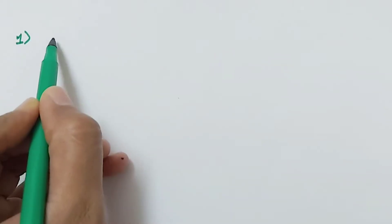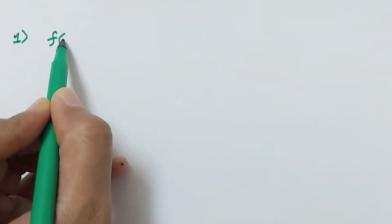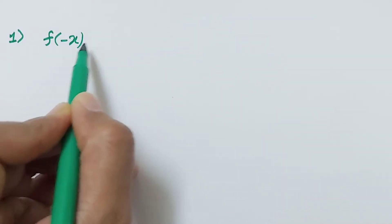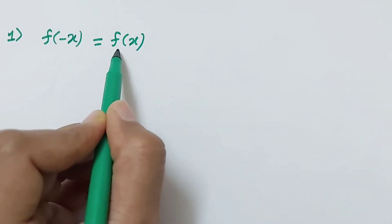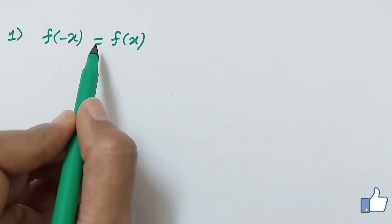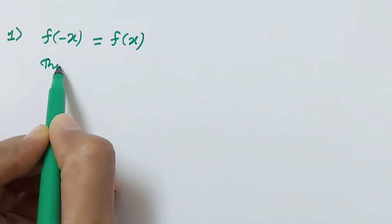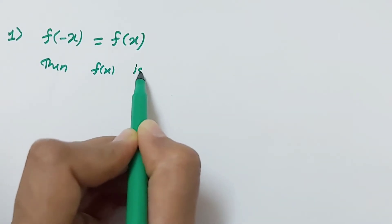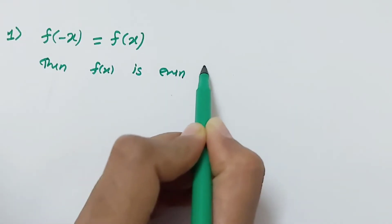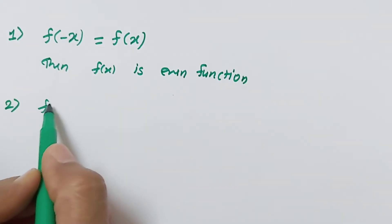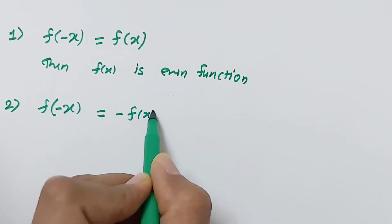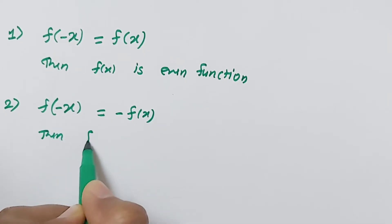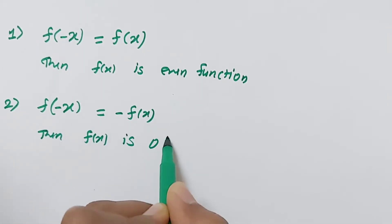Without wasting time, we start today's lecture. What is the even function? If we have given the function f of x and if we replace x by minus x, then the value of that function is equal to the value of our actual function — that is, f of minus x equals f of x — then f of x is an even function. But if we replace x by minus x and we get minus f of x, then we can say f of x is an odd function.